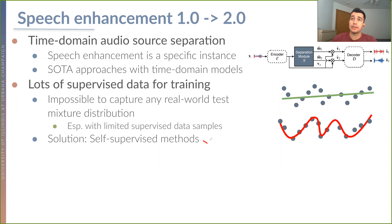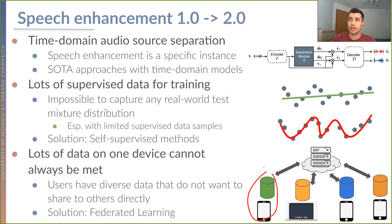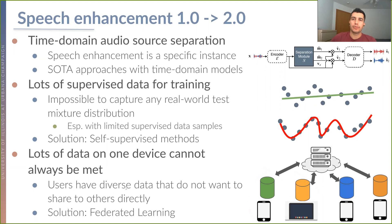It's impossible to capture any kind of real-world test mixture distribution using such a limited supervised data collection setup. This is why we need self-supervised methods. On the other hand, we can't meet the assumption that all of the data are going to be available at once on a single device. Different users might have diverse data, but they might not be willing to share their data with each other or with any kind of server, and this is why we need federated learning.